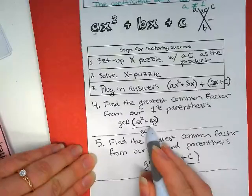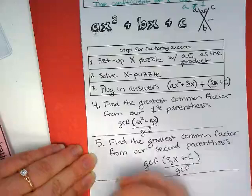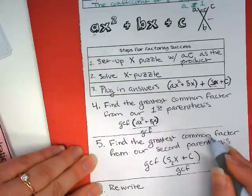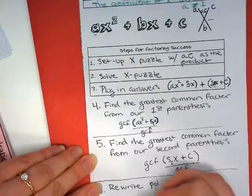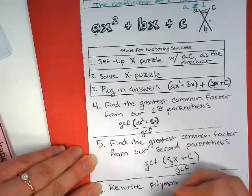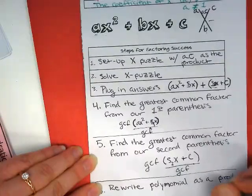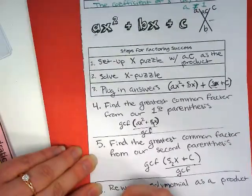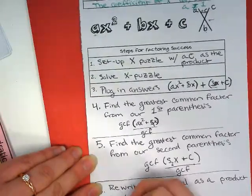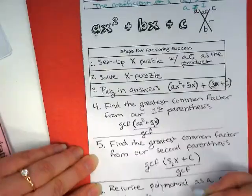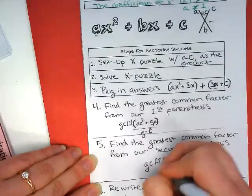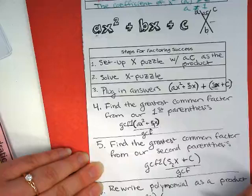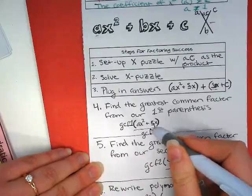Now that we have our solutions written as products of a greatest common factor, we can rewrite our polynomial as a product of two factors. And it'll be the sum of the first GCF plus the second GCF. So up here is GCF1. Over here is GCF2. And it'll be multiplied by what is left when we divide out our GCF.